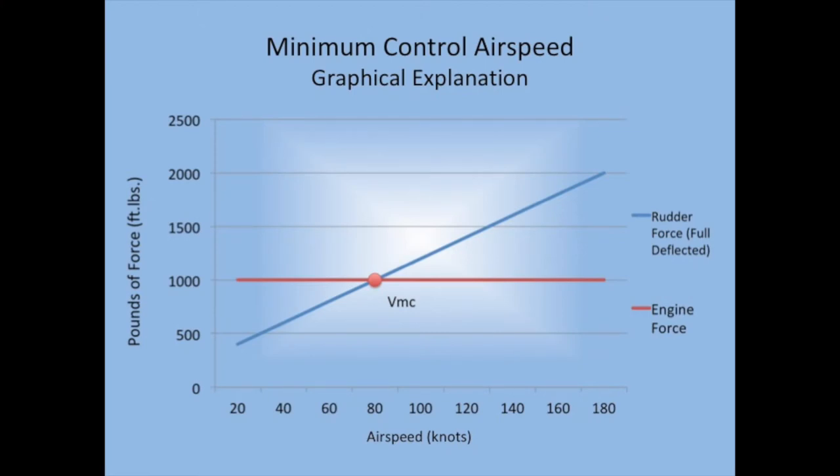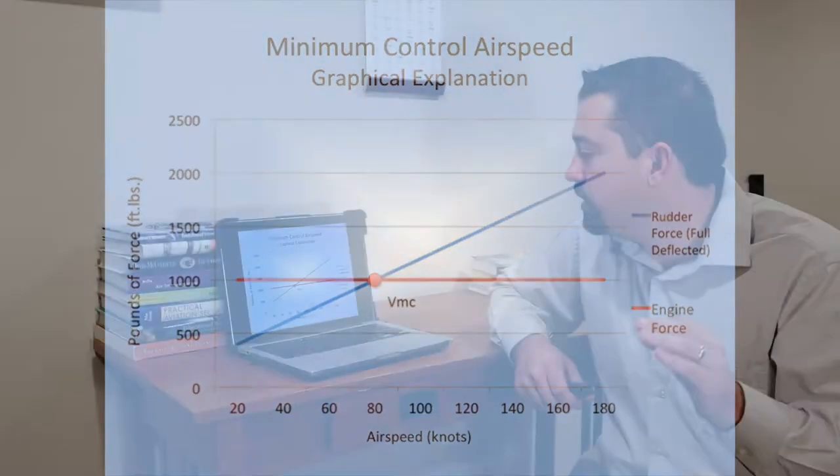If we're at 120 knots, we can see we have a surplus of force from the rudder. We are able to overcome the asymmetrical thrust of the aircraft. As the aircraft decelerates to 80 knots though, we start to have less and less rudder authority because there's less air traveling over the rudder. At 80 knots, the rudder forces equal the engine forces, and that is the minimum control speed.